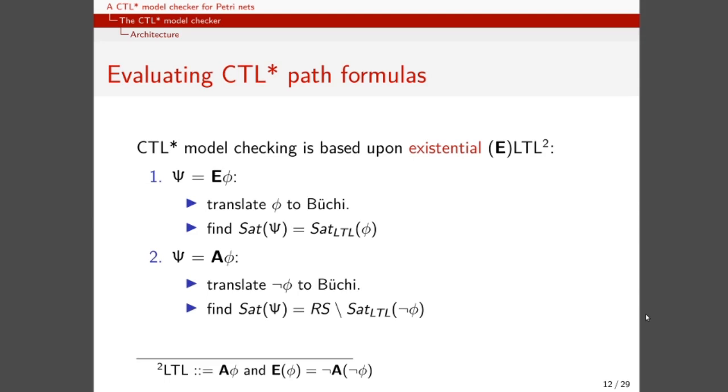Recall that LTL assumes path formula to be universally quantified. This means that for a proposition to be true, it must be true for every possible computation of our program. Now, with CTL-STAR we are considering existential LTL. Thus, we are treating each path formula as existentially quantified, and when we find a path formula which is universally quantified, we first have to invert it by translating the negated formula to Büchi, and then the sat set is going to be the difference between the whole set of states of the reachability graph of our model minus the set of states satisfying not phi.